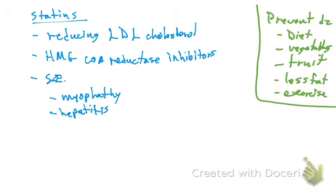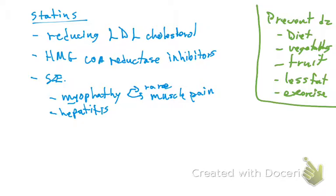Myopathy is rare, but it does happen. 'Myo' means muscles, so the patient is going to have muscle pain. Besides muscle pain, the patient will have serum creatinine kinase elevated — 10 times higher than normal. So we will see muscle pain plus creatinine kinase elevation.